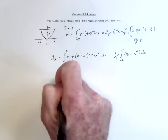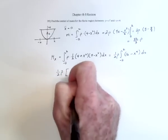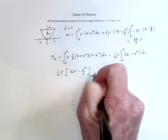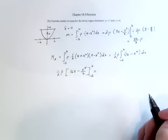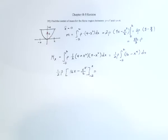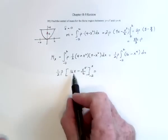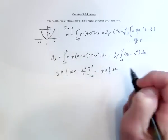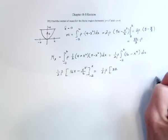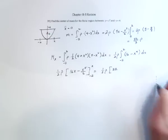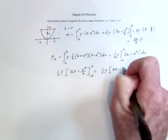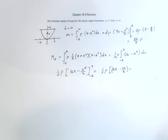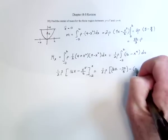The 1 half times density is factored out. Integrate 16x minus x to the 5th over 5, from negative 2 to positive 2. Substitute the 2 and we get 32. Then 2 to the 5th, that's 2, 4, 8, 16, 32 fifths. Then subtract when you substitute negative 2 in there, that's negative 32.